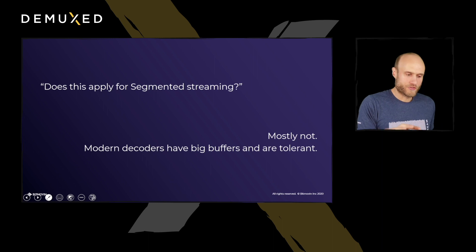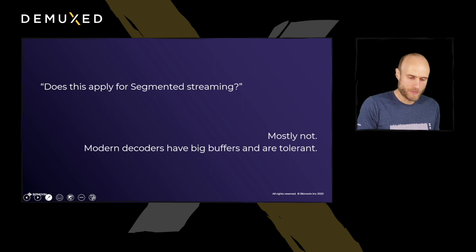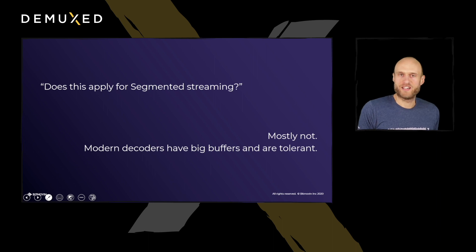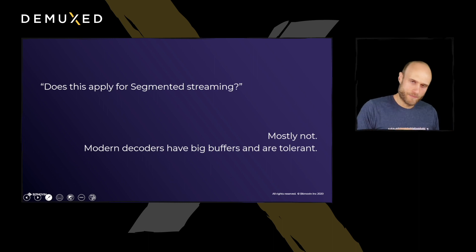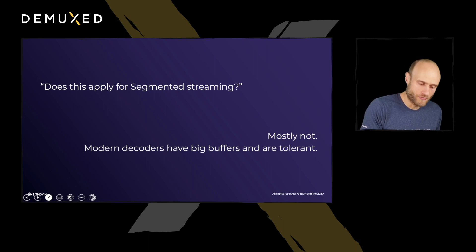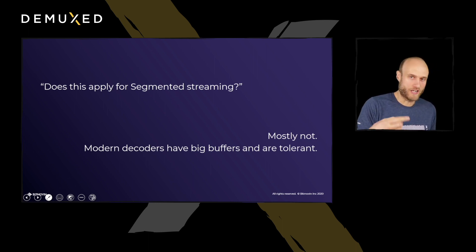Finally, some question-and-answer style things we've heard and observed in reality. How does this apply for segmented streaming? Does it apply at all? Well, mostly no. For adaptive streaming solutions, we don't have a fixed channel — we have the internet, we get what we get. For the transmission side, it doesn't really apply. And for the decoder side, in adaptive streaming we're downloading whole segments usually, so the decoding buffers in the decoders are very big and you don't have buffering issues there. Most decoders are also very tolerant of level limits and slight changes.